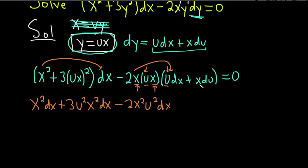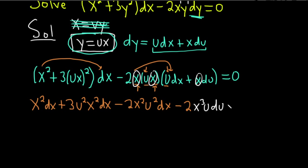For the remaining term we have an extra x, so we get minus 2 times x cubed times u du. So the full expanded equation equals zero.